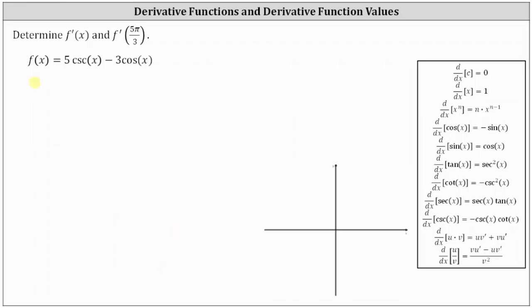f prime of x is equal to the derivative of five cosecant x minus three cosine x with respect to x, which is equal to five times the derivative of cosecant x with respect to x, which is negative cosecant x cotangent x. And then minus three times the derivative of cosine x with respect to x, which is negative sine x.